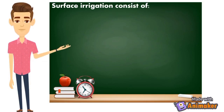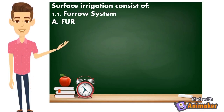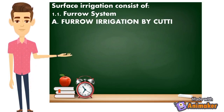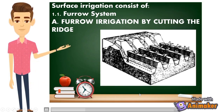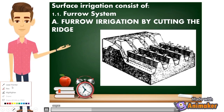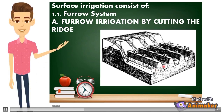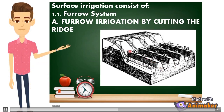Surface irrigation consists of first, the furrow system. So what is the furrow system? Furrow irrigation is done by cutting the ridge. As you can see in this example, there are furrows — yung mga farrows, yung dinadaanan ng tubig mismo — and ito yung tinatawag na ridge, kung saan natin itatanim yung ating mga halaman.